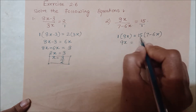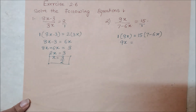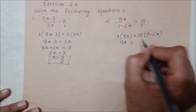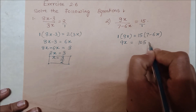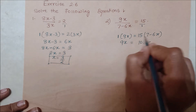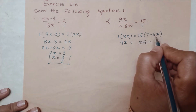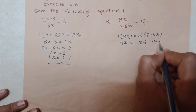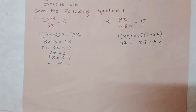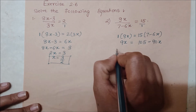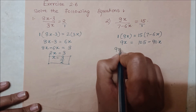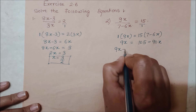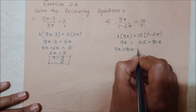Multiply karenge: 9x is equal to 15 into 7, jo kitna hoga — 105. Toh 9x is equal to 105 minus 15 times 6x. 15 times 6 kitna hota hai — 90. Toh yah aayega 90x. Ab humein constant term ko ek taraf rakhna hai, variable wali terms ko ek taraf le jaana hai. 9x yahan rahega, minus 90x tha, plus 90x ho jayega, x is equal to...